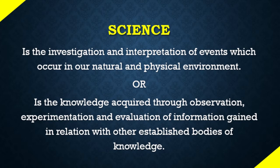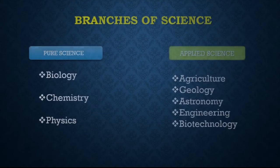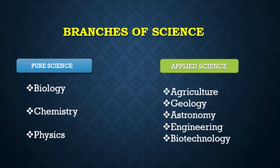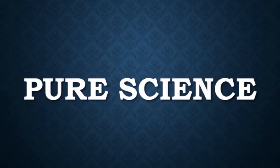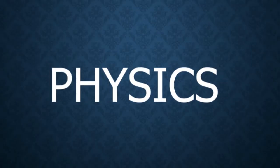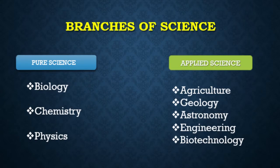Science involves a gathering and recording of knowledge to find answers to the questions and challenges that life poses every day. Science can be grouped into two: pure science and applied science. Pure science is simply obtaining knowledge from research, and it includes biology, chemistry, and physics. Biology is the study of living things; physics is concerned with forces that exist between objects and the interrelation between matter and energy.